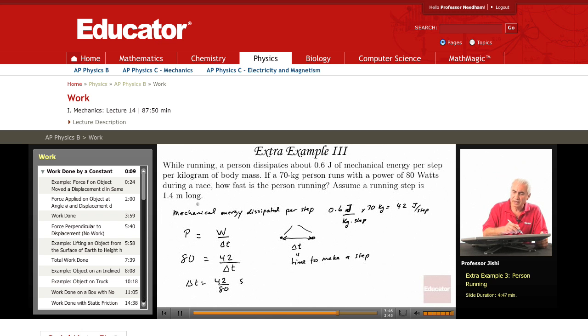But the length of one step is 1.4 meters. So, the speed V, or velocity, is the distance divided by the time. The distance for one step is 1.4 meters, and the time to make this step is 42 over 80.